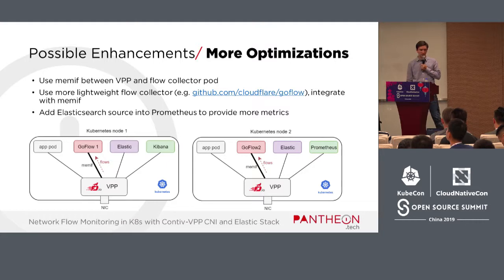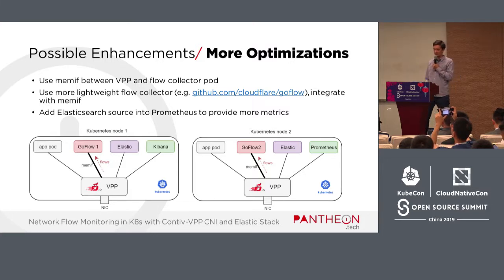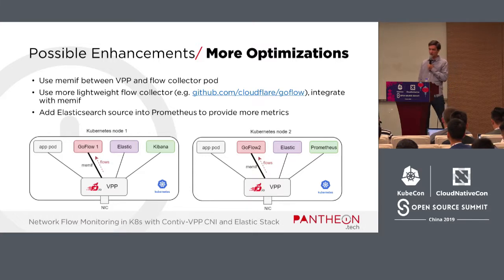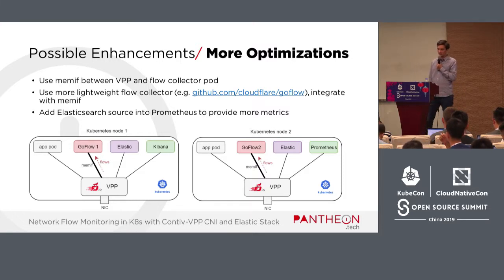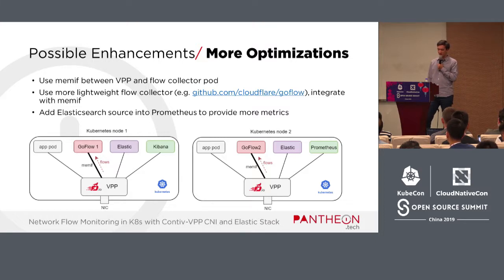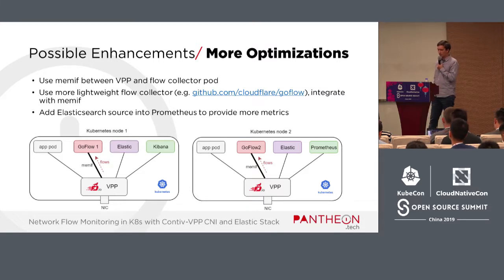I was also talking about the MemIF interface that VPP supports. To recap: it is a special type of interface which allows you to forward packets between VPP running in user space to a pod, bypassing the kernel through shared memory. But for that you need an application that is MemIF-aware, meaning it uses the MemIF library. We can actually use that to build a more lightweight flow collector than Logstash — for instance, using CloudFlare's GoFlow project integrated with the MemIF library in Go, so all flows from VPP to the flow collector go through shared memory.